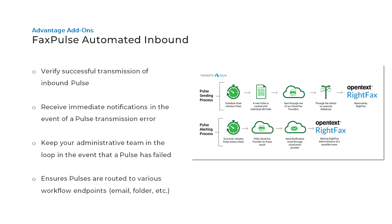Fax Pulse Automated Inbound, also known as Fax Pulse AI, is a great tool to verify your inbound faxing is working correctly. It will track an inbound fax from the time your server receives a call all the way through the various delivery workflows such as a network folder, email, or even delivery into an application. Fax Pulse AI will also send you an email if there is a phone line problem.